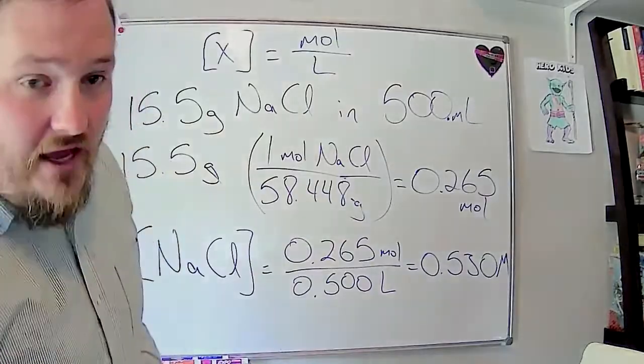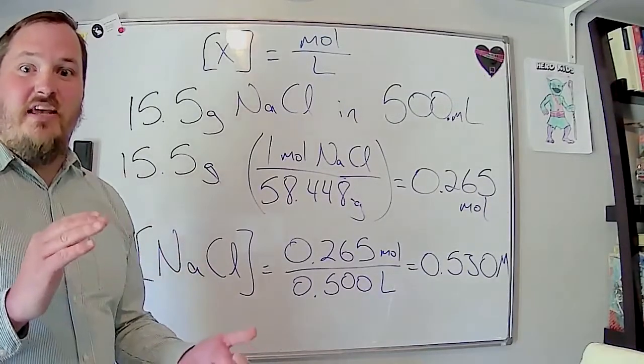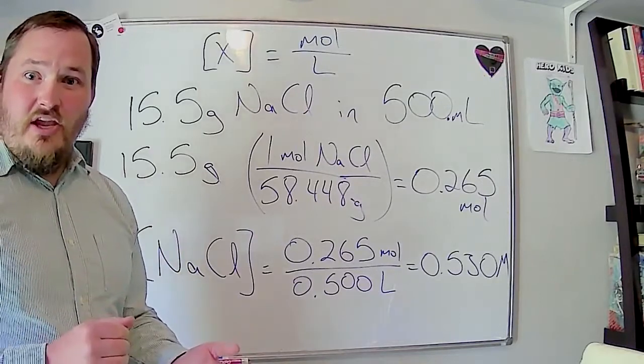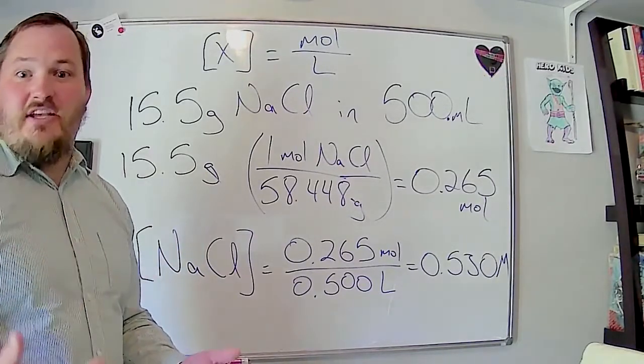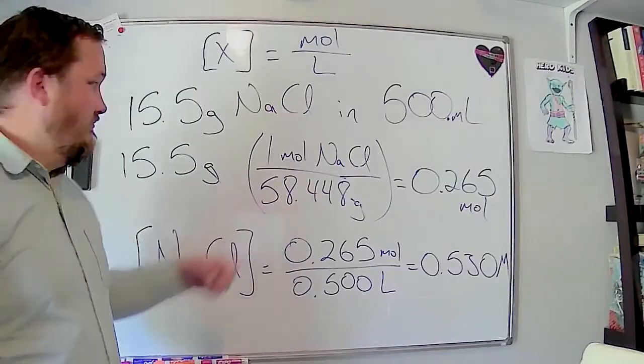A student asks: for every mole, is that an atom? A mole is a huge number of atoms — six times ten to the 23rd atoms. It's just a convenient way of counting them. For every mole of sodium chloride, the whole weight of that is 58.448 grams per mole.